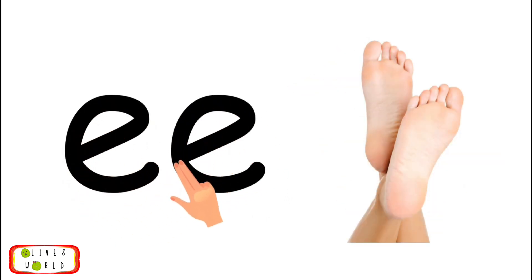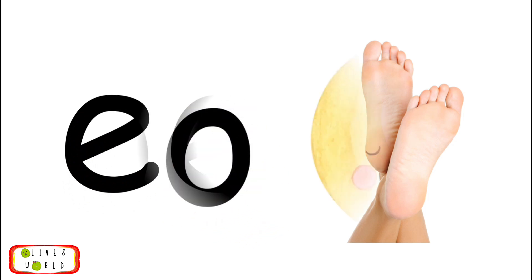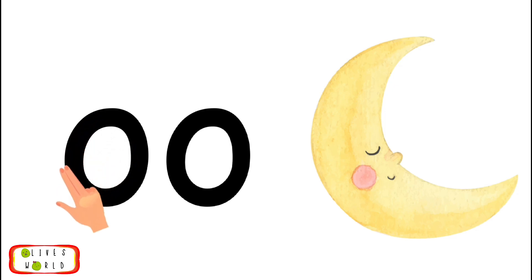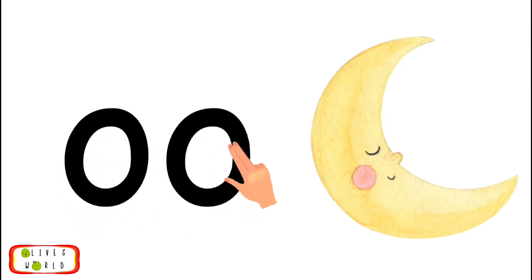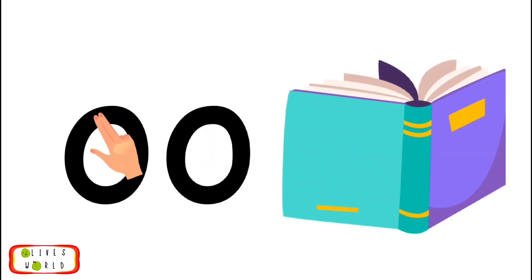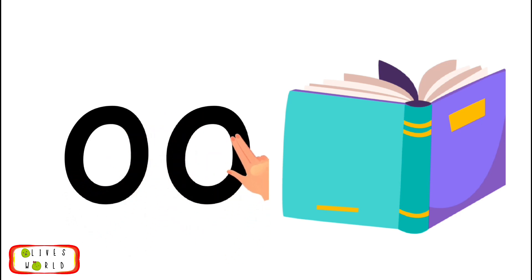E, E, feet, ee. Repeat E, E, feet, ee. O, O, moon, oo. Repeat O, O, moon, oo. O, O, book, oo. Repeat O, O, book, oo.